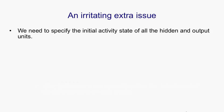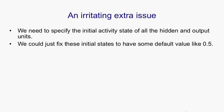There's an irritating extra issue. If we don't specify the initial state of all the units, for example, if some of them are hidden or output units, then we have to start them off in some particular state. We could just fix those initial states to have some default value like 0.5, but that might make the system work not quite as well as it would otherwise work if it had some more sensible initial value.